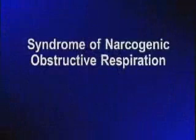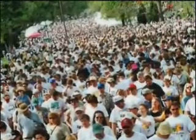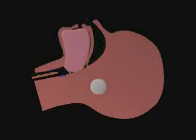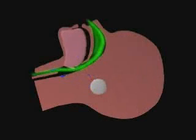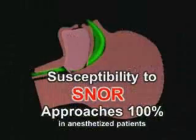There is a comparable condition encountered in anesthesia practice that we have termed the Syndrome of Narcogenic Obstructive Respiration, or SNORE. In both OSA and SNORE, the upper airway is obstructed by the relaxation and collapse of soft tissue structures into the oropharynx. Roughly 7% of the general population is susceptible to OSA. In OSA, sleep induces upper airway obstruction. This obstruction is spontaneously and intermittently relieved in a periodic breathing pattern cycled by local reflexes. In anesthetized patients, susceptibility to SNORE approaches 100% as the level of sedation approaches general anesthesia.